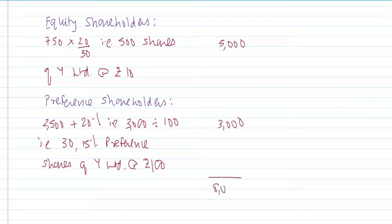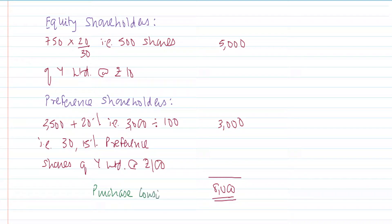Taking the total: equity shareholders receive 5,000 and preference shareholders receive 3,000, giving a total of 8,000. Our purchase consideration is 8,000.